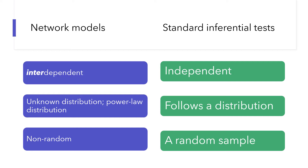Second, standard inferential tests assume the variables follow a particular distribution, such as a normal distribution. But the distribution of variables in networks does not follow a normal distribution. Instead, it may follow a power law distribution, like the degree distribution in scale-free networks. In network data, the distribution of variables may also be unknown.